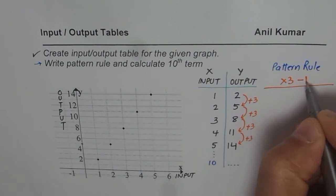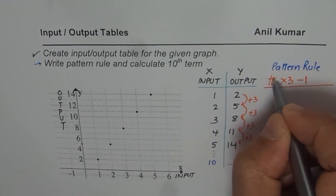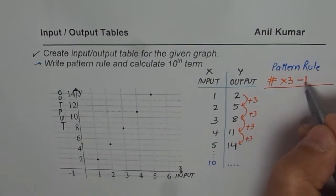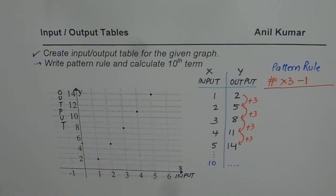Times 3 minus 1. So any input, let me write this as a hash or X. Times 3 minus 1 is my pattern rule.